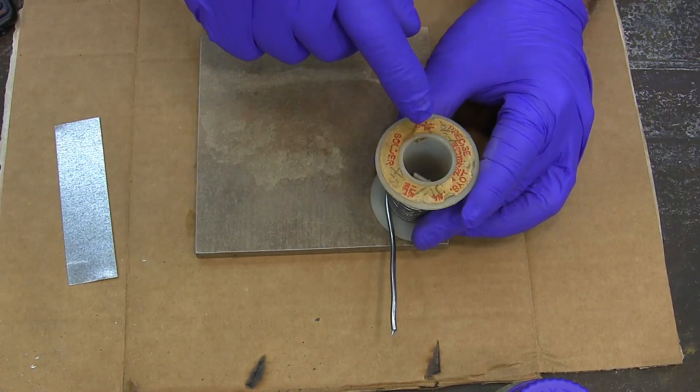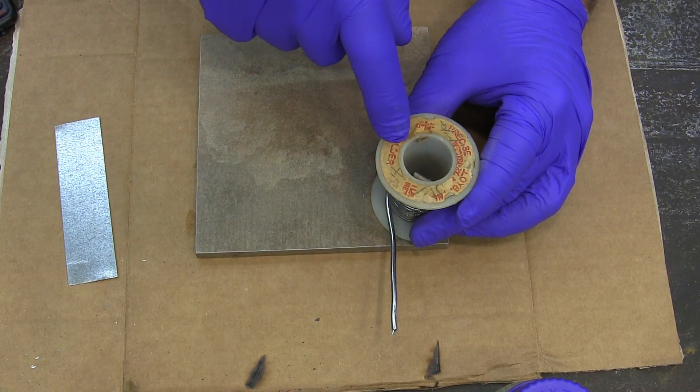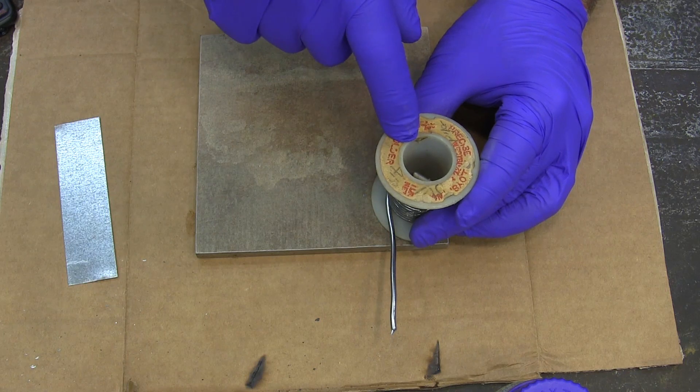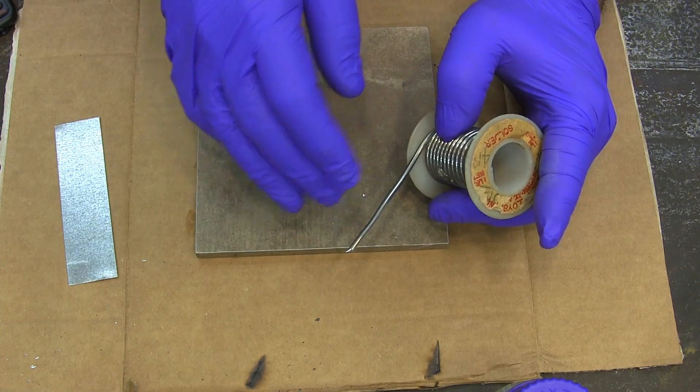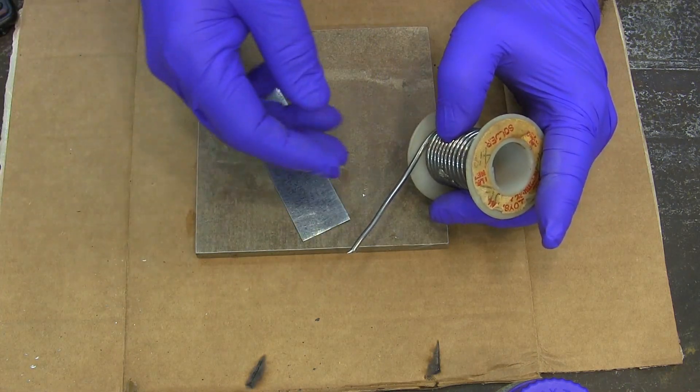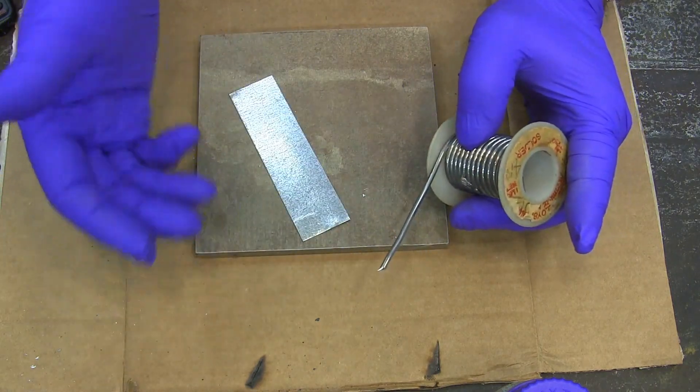And then I'm using 60-40 solder. That is 40% tin and 60% lead. The 60-40 solder is going to work better on this than lead free. And you don't need the lead free because you're not doing water pipes.